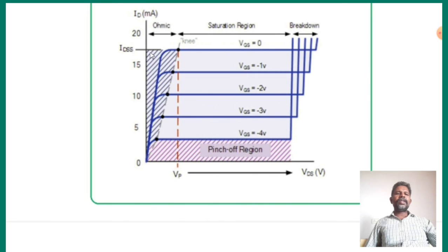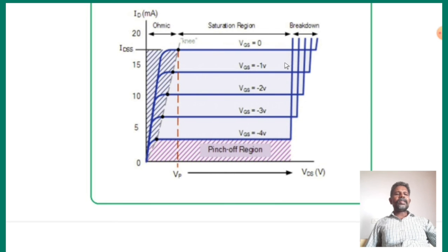This is the ohmic region. In the saturation region, we have electricity in short-circuit, so the device functions as a transistor. Some time after the transistor increases, it will increase. Breakdown region is when electricity breaks down. We have 4 types of regions: ohmic region, saturation region, breakdown region, and pinch-off region. This is what we have to understand about drain-source voltage and drain current.